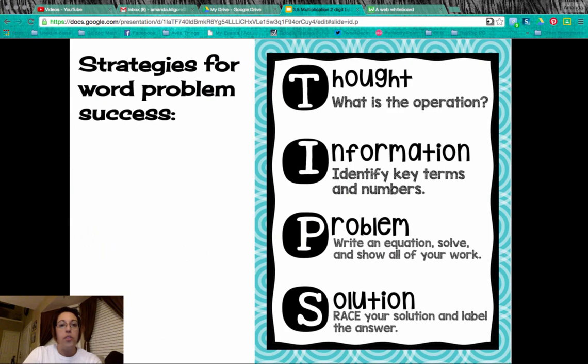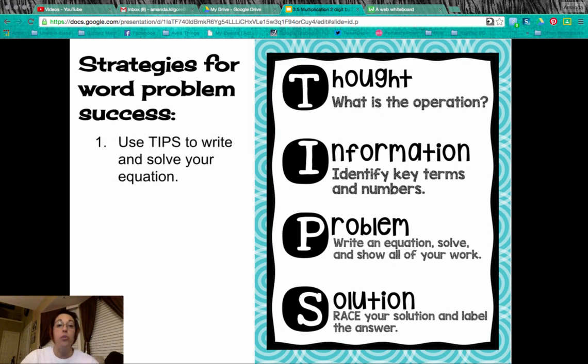So let's start with our strategies for word problem success. Our first strategy is to use tips to help you write and solve your equation. T stands for thought - what is the operation that you will use? I stands for information - identify the key terms and numbers in the problem. P is for problem - write an equation, solve it and show all of your work. And S is for your solution.